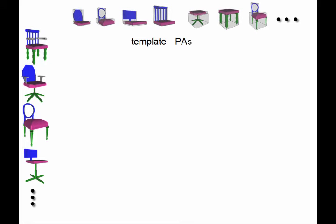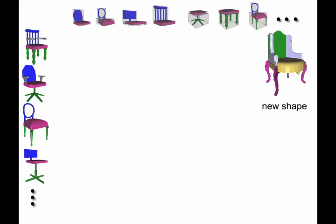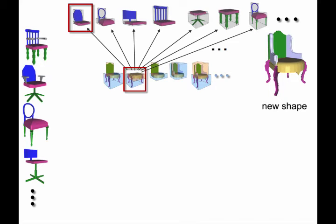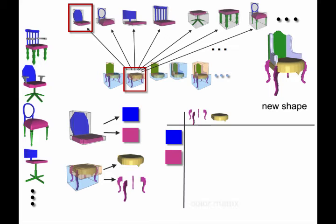Based on the detected part arrangements, in the supervised phase, we can quickly validate any new input shape and extract its part arrangement, if any. Essentially, we use the detected part arrangement as a template to validate the new shape.